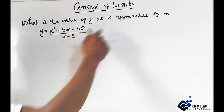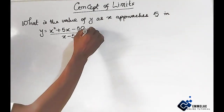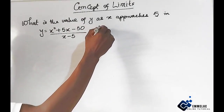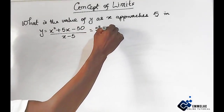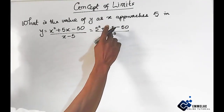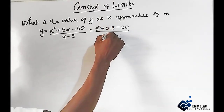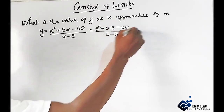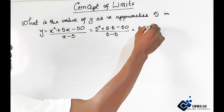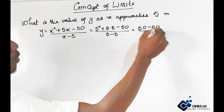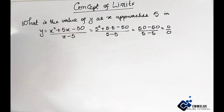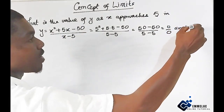If we just plug in x equals 5 into this expression, we have 5 raised to the power of 2, plus 5 times 5 minus 50, all over 5 minus 5. This gives us 25 plus 25, which is 50 minus 50, all over 5 minus 5, which gives us 0 over 0. And this is undefined.